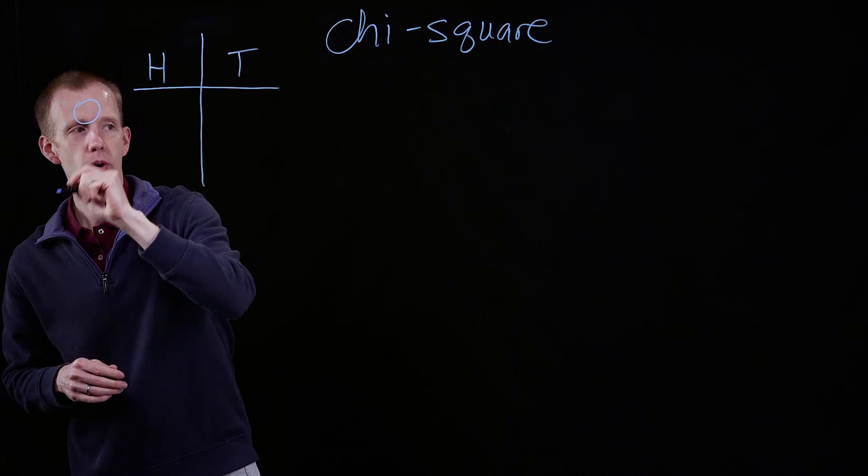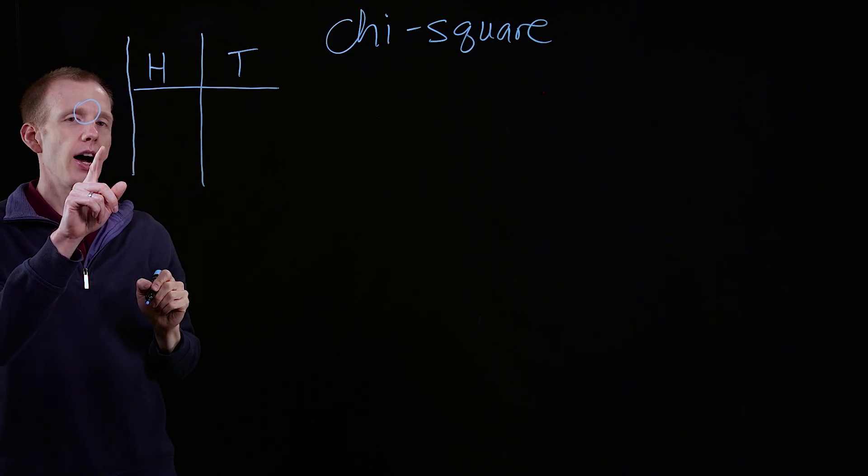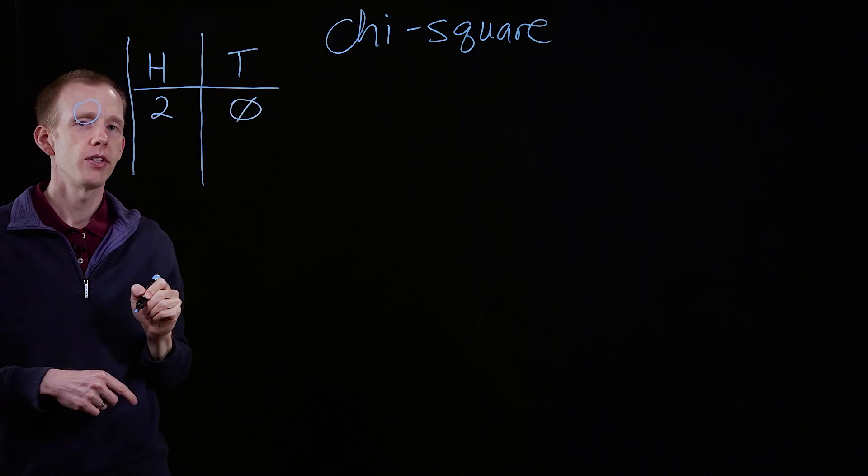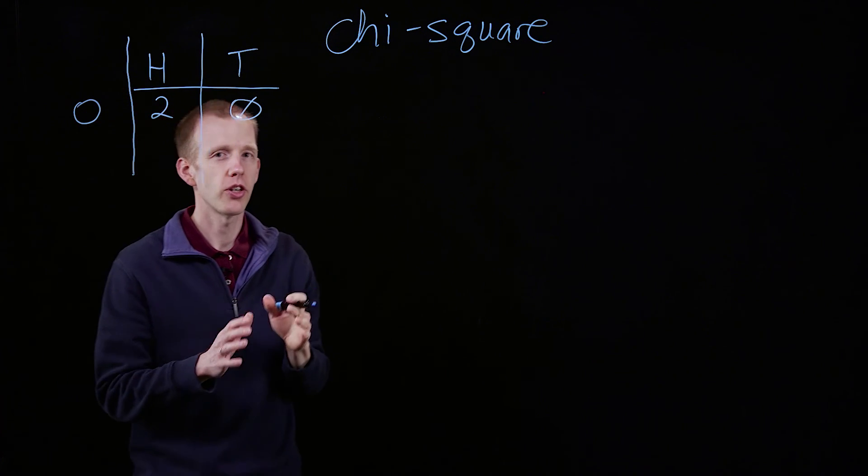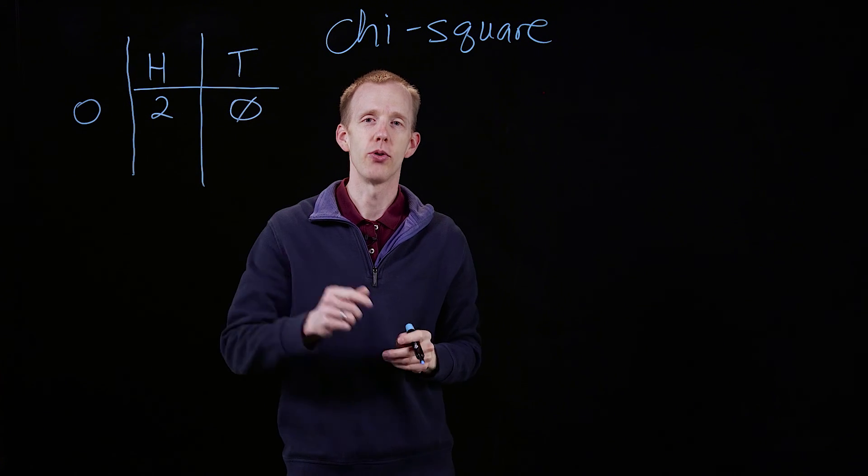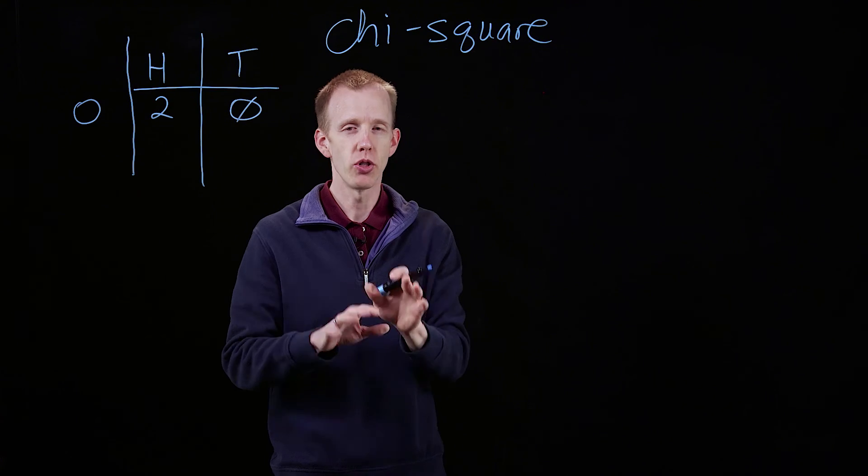And I observe that I see heads twice and I never see tails. How convinced could you be, how convinced could I make you, that this coin has two heads? We've never seen tails come up, so you don't get to see the coin.